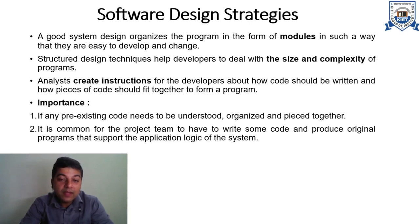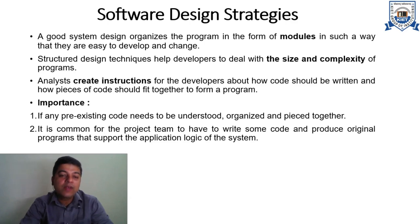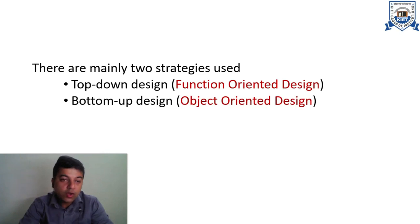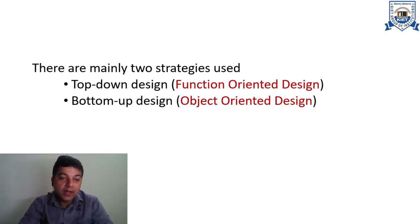Design plays a critical role — it works as a catalyst which helps make a quality product at the end of the day for the software organization and ultimately for our client. We classify software design strategies into two categories: top-down design, also called function-oriented design, and bottom-up design, also called object-oriented design.